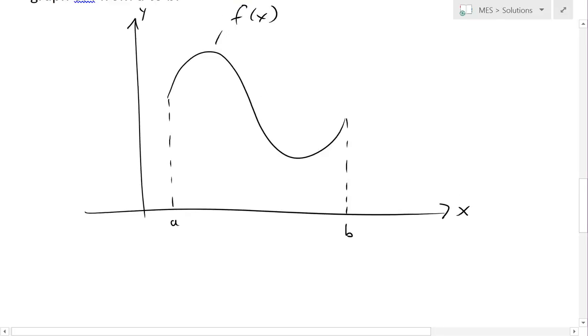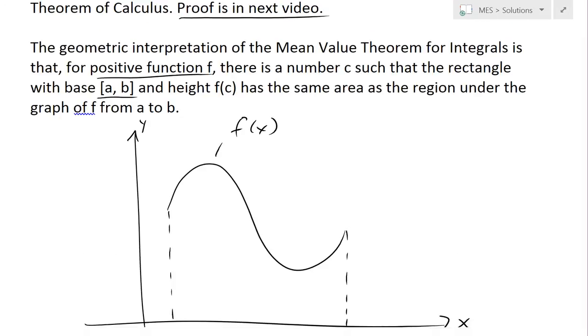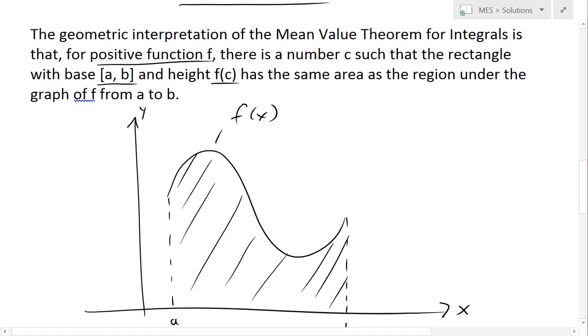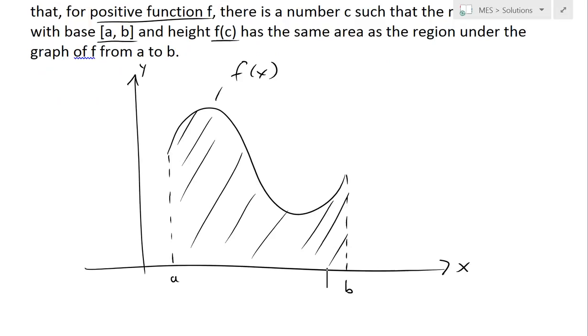Then the Mean Value Theorem says that there is a number c or a height c that if you were to take, let's say, shade this in as the area under this curve. Yeah, so now this theorem says that if you take the average value of this, it will look something like this. I'll draw it in red.